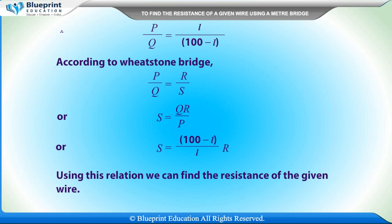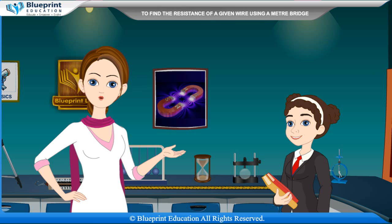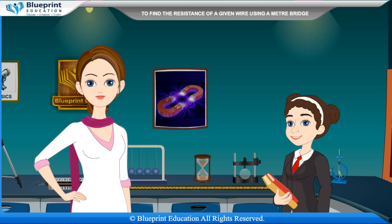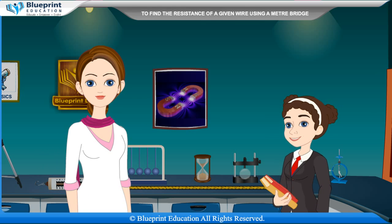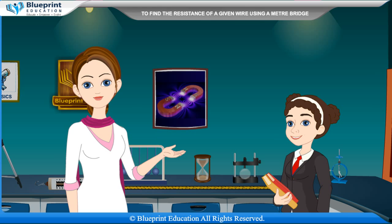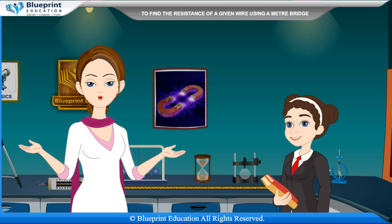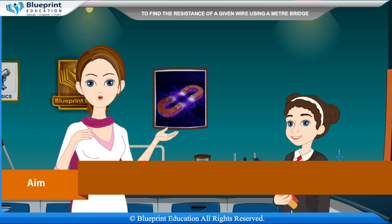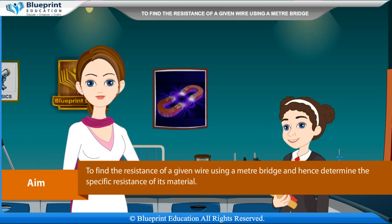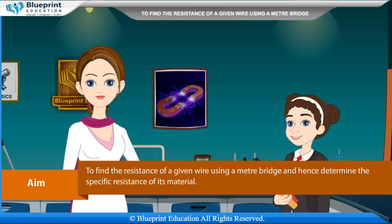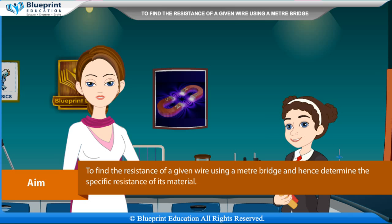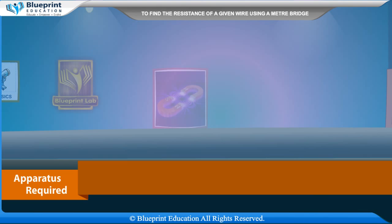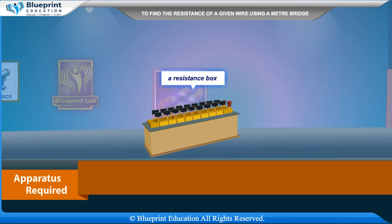Using this relation we can find the resistance of the given wire. Our aim is to find the resistance of a given wire using a meter bridge and hence determine the specific resistance of its material. Apparatus required: a meter bridge, a resistance box, a galvanometer.